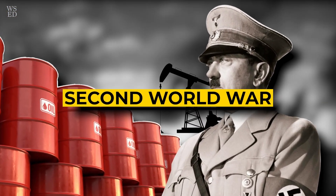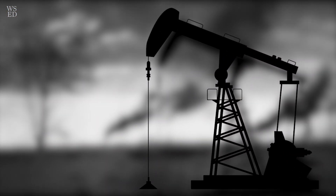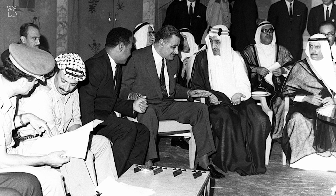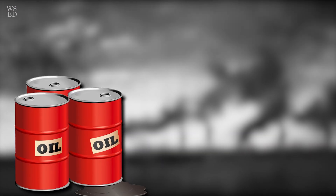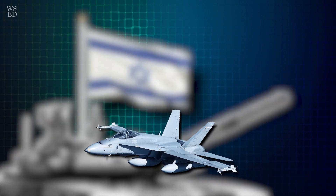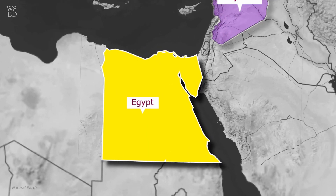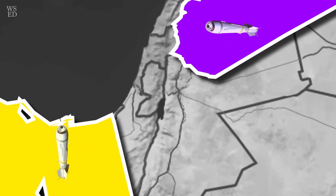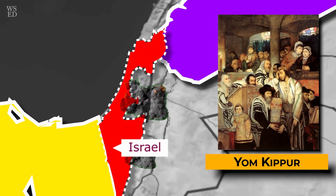In the period after the Second World War, there were two major oil crises. The first occurred in 1973 when the Arab members of OPEC decided to quadruple the price of oil to nearly $12 per barrel. The spark was the Yom Kippur War, when a coalition of Arab states led by Egypt and Syria launched a surprise attack on Israel on the holiest day of the Jewish calendar.